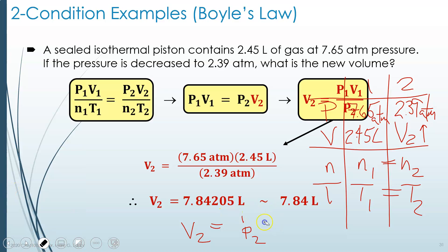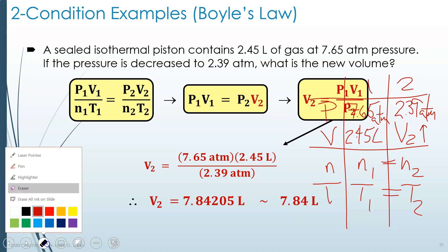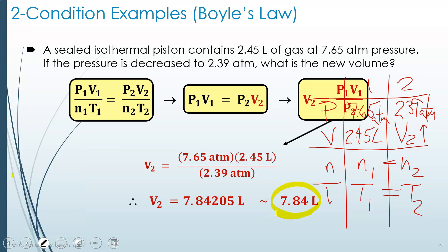I'm going to erase that so it's not cluttering up the notes here. And we get the volume has increased, as expected, to 7.84 liters. We're rounding it to three significant figures, since the lowest number of sig figs in the problem, actually all of them are three sig figs. So we round to our final answer of 7.84 liters.